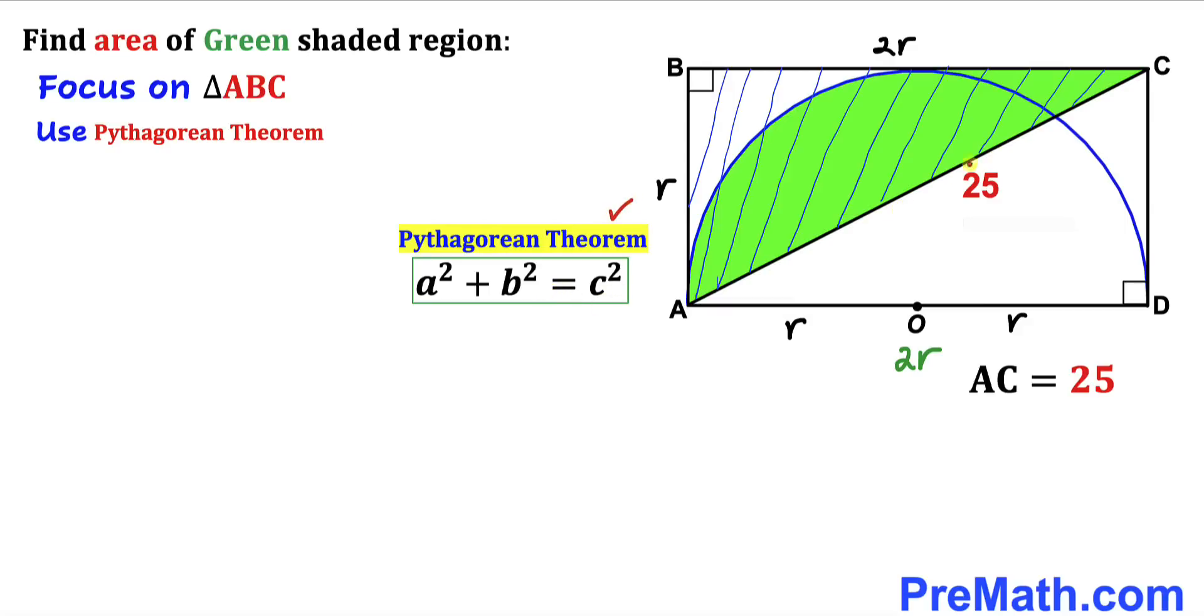Let me go ahead and call this longest leg our side C. I'm going to call this side A, and this side I'm going to call B. Now let's go ahead and fill in the blanks in this Pythagorean formula.